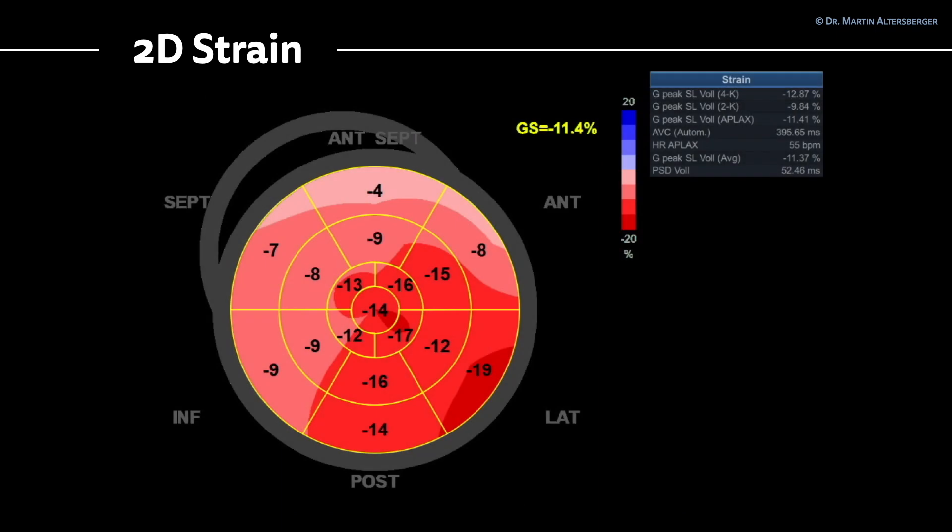This is now the global longitudinal strain of all three views: the four-chamber view, the two-chamber view, and the apical long axis view. Overall, the global longitudinal peak systolic strain is in the range of minus 11.4 percent — markedly reduced.